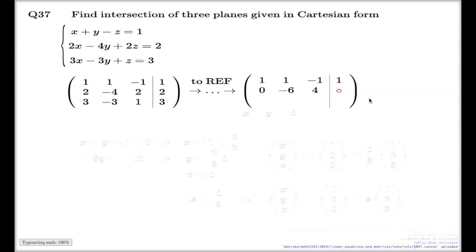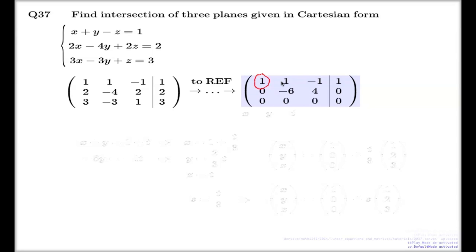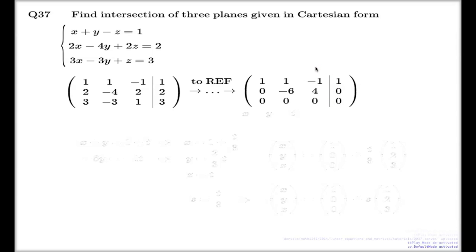If I go to the row echelon form, the result is this matrix. Now I can do my analysis, because I can clearly identify the pivots — here is one pivot, and here is another. We have two pivots on the left-hand side and no pivots on the right-hand side. So how many solutions do we have? Infinitely many. Moreover, we have only one non-leading column, which means we need only one parameter to describe the solution.